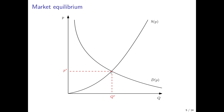At this point supply is equal to demand, so there is no excess supply and no excess demand. The price level is at equilibrium level p* where there is no reason why the price should change, because supply is equal to demand. When demand as a function of the price equals supply as a function of the price, consumers want to buy exactly the amount of goods that suppliers want to supply, so there is no upward or downward pressure on the price level.